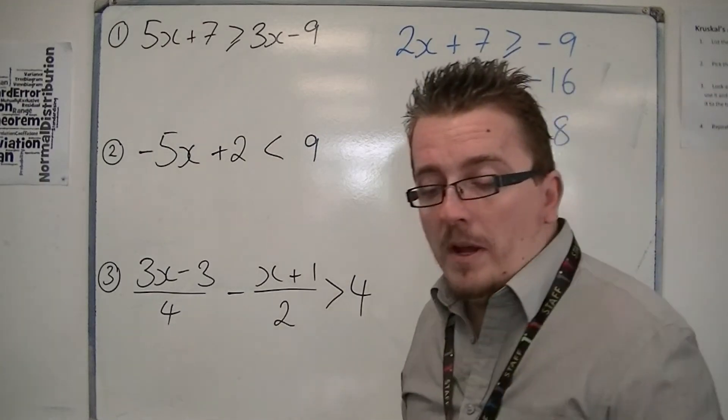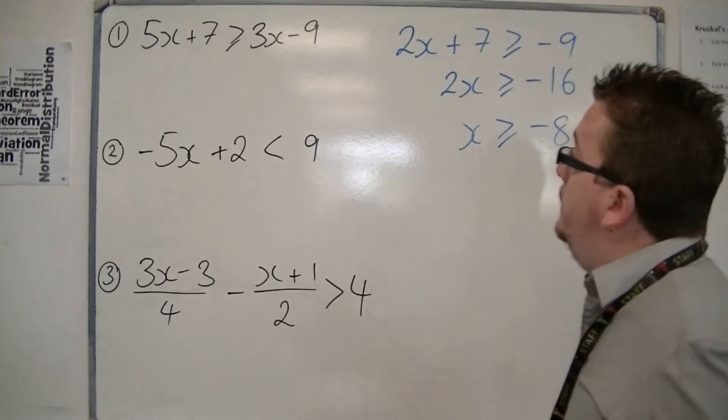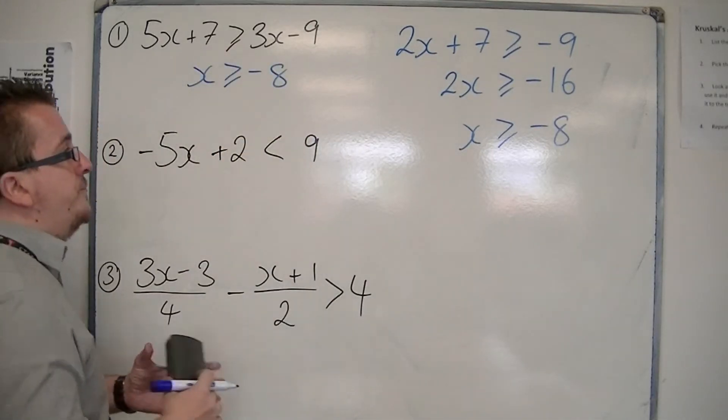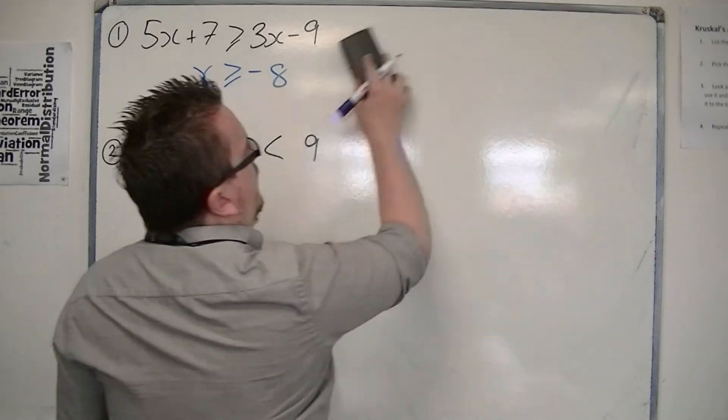Dividing by a positive number doesn't change the sign. So the answer is x is greater than or equal to minus 8. That's the first one.